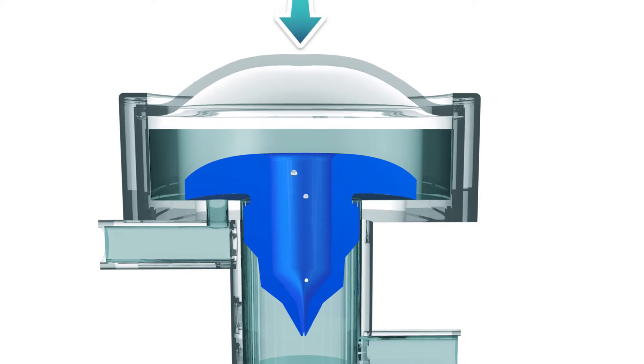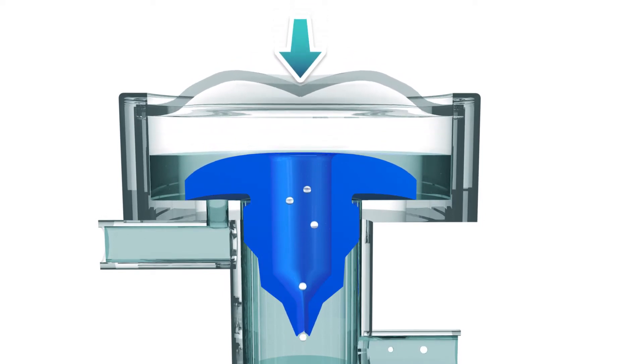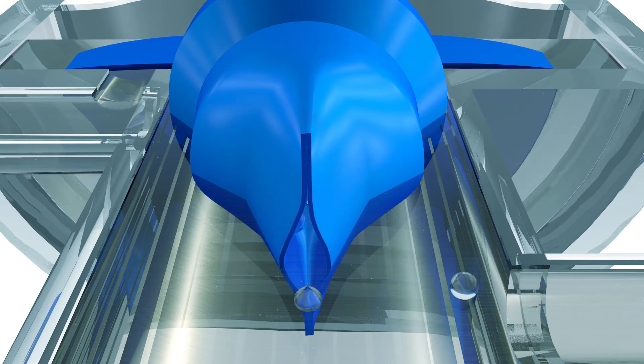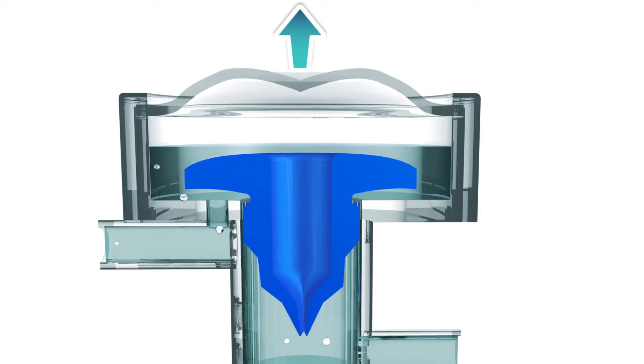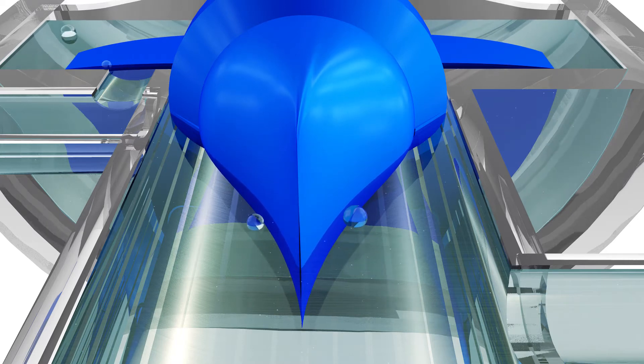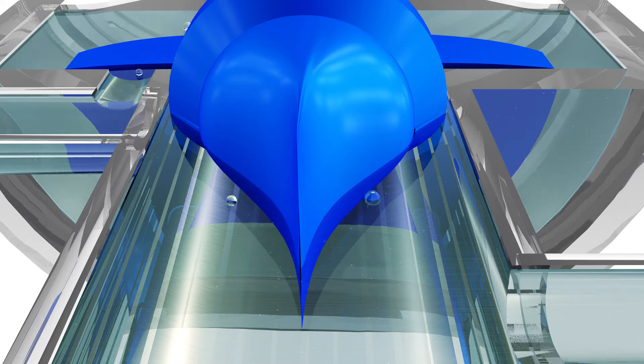When he presses the pump, the fuel between the upper membrane and the valve is pushed towards the carburetor. When the upper membrane is released, the valve closes, avoiding fuel flow back. Meanwhile, the depression created sucks in the fuel and fills the empty space again thanks to the umbrella valve.